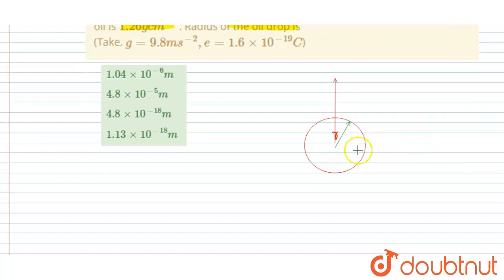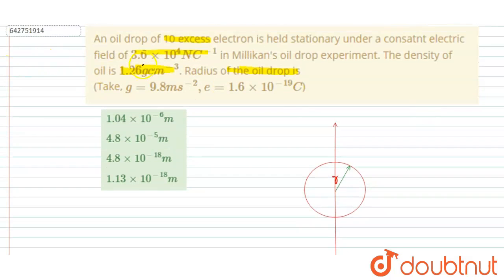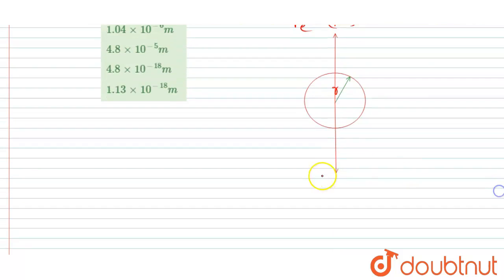And the mg force, the weight force, will act in downward direction. And it is given in the question the two are balancing each other. So I will write 10e is the charge into electric field E is the force, electrostatic force in upward direction, and mg force will act in downward direction.